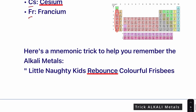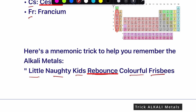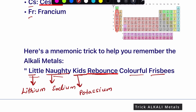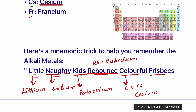Here is a mnemonic trick to help you remember the alkali metals: 'Little Naughty Kids Rebounds Colorful Frisbees.' From 'Little' — Li for lithium; 'Naughty' — Na for sodium, where the symbol for sodium is Na; 'Kids' — K for potassium; 'Rebounds' — Rb for rubidium; 'Colorful' — Cs for cesium; and 'Frisbees' — Fr for francium.